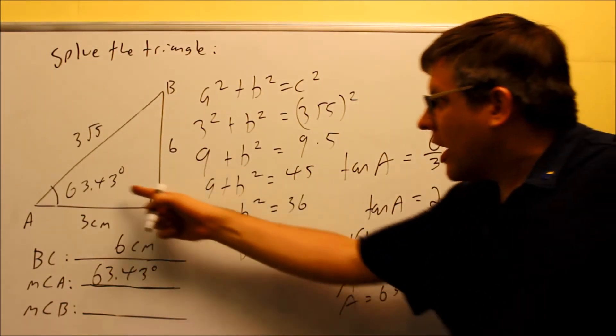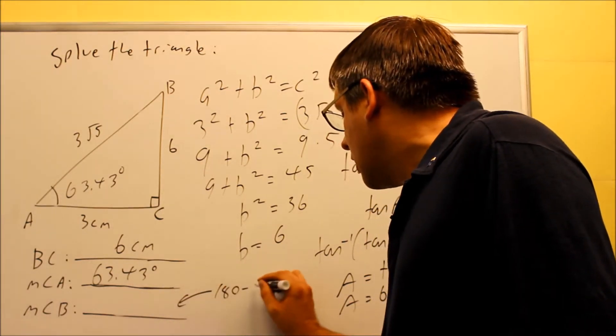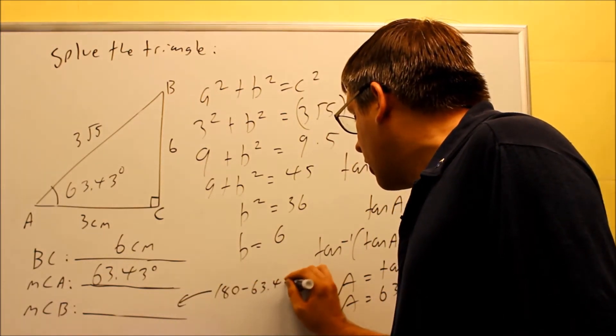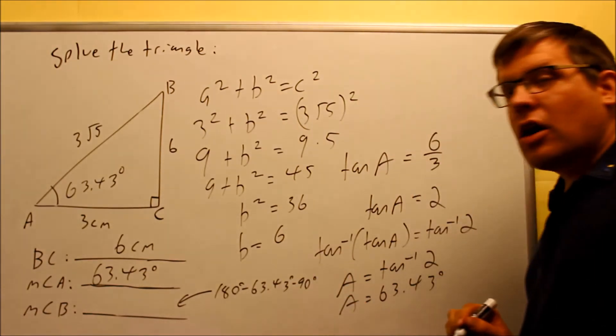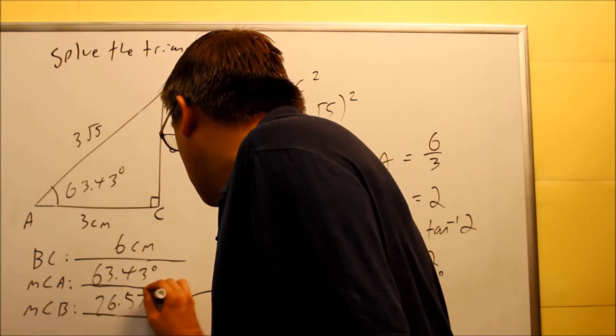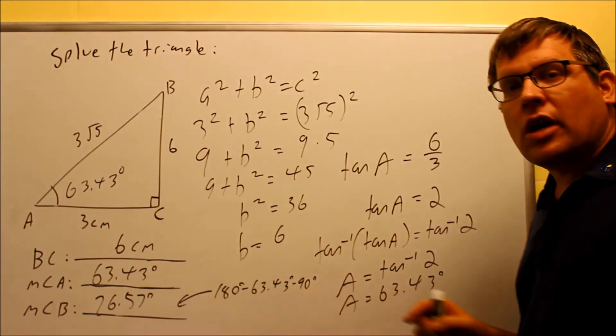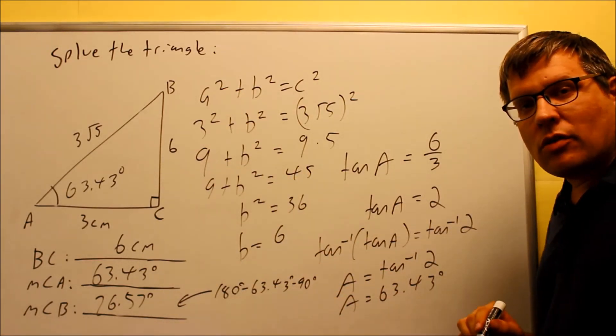Now I can do that by just subtracting these two things from 180. So to get this answer, I'll just do 180 minus 63.43, then minus 90 degrees. So if I do all that, what you should get for the final answer would be 26.57 degrees, and that means that now our triangle is going to be solved. We found all the missing sides and all the missing angles.